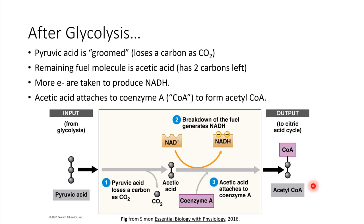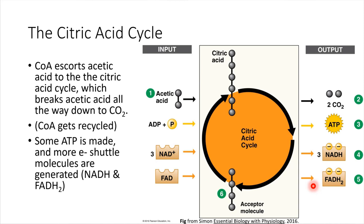The next part of the processing is to enter the citric acid cycle, which takes place inside the mitochondria. Acetic acid, escorted by coenzyme A, gets brought into this cycle. It's a cycle that can keep going round and round to process more and more acetic acid molecules continuously. As each acetic acid molecule enters, this stage completes the breakdown of acetic acid — each carbon ends up in a molecule of CO₂, producing more waste products.